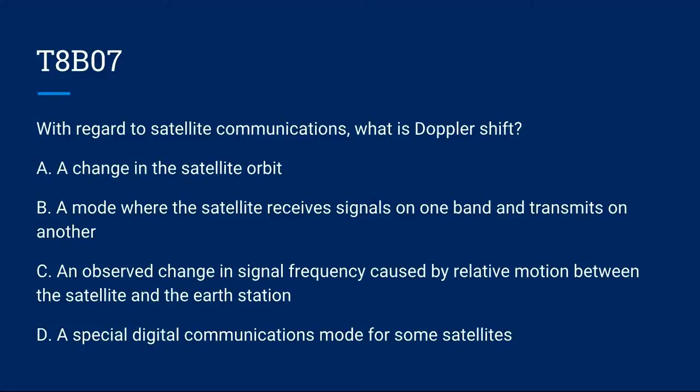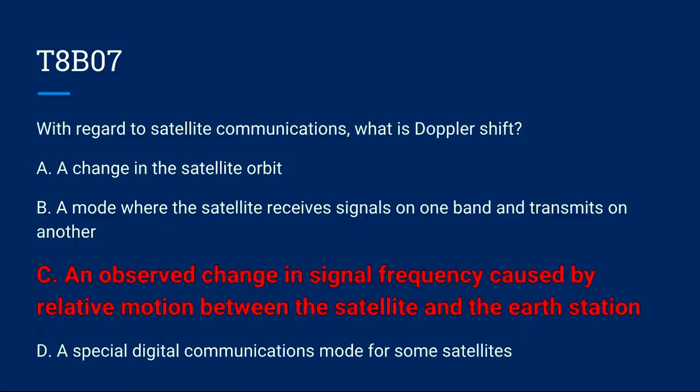T8B07: With regard to satellite communications, what is Doppler shift? A. A change in the satellite orbit. B. A mode where the satellite receives signals on one band and transmits on another. C. An observed change in signal frequency caused by relative motion between the satellite and the Earth station. Or D. A special communications mode for some satellites. The correct answer is C.